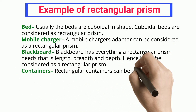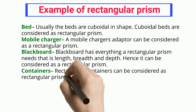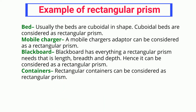Blackboard: a blackboard has everything a rectangular prism needs — length, breadth, and depth — and hence it can be considered as a rectangular prism. Containers: rectangular containers can be considered as rectangular prisms.